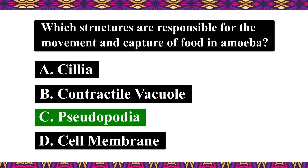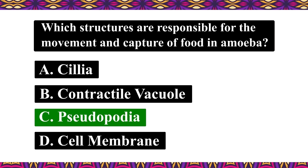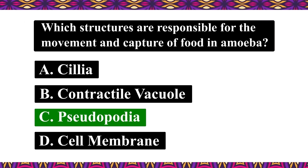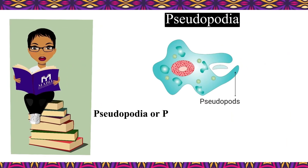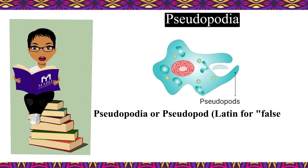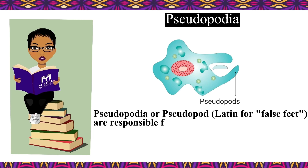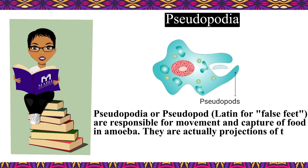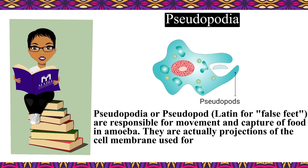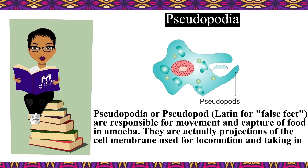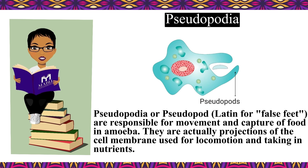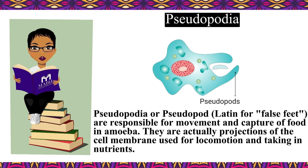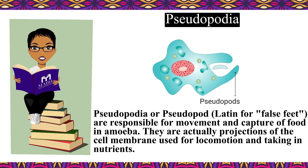The correct answer is C. Pseudopodia. Pseudopodia, or pseudopod — Latin for false feet — are responsible for movement and capture of food in amoeba. They are actually projections of the cell membrane used for locomotion and taking in nutrients.